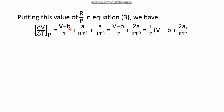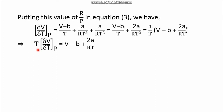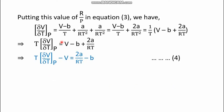Equation number three has (∂v/∂T)_p = R/p + a/RT². Substituting the expression for R/p, we get (∂v/∂T)_p = (v − b)/t + a/RT² + a/RT², which equals (v − b)/t + 2a/RT². Taking 1/t as common gives (v − b + 2a/RT)/t. Multiplying both sides by t and rearranging, we get equation number four: t·(∂v/∂T)_p − v = 2a/RT − b.